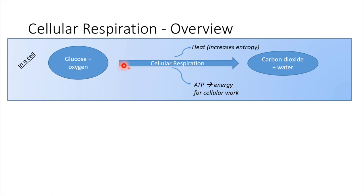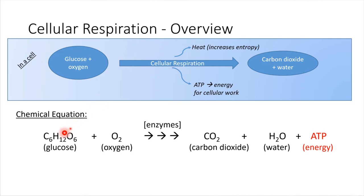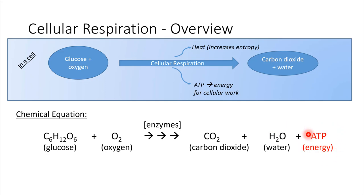How does the cell accomplish this? How does the cell convert glucose into a usable form of energy? Let's start by looking at the overall chemical equation — a more conceptual way to look at cellular respiration. We're starting with a molecule of glucose, combining it with oxygen, and the cell uses a bunch of enzymes. There are a whole series of reactions, catalyzed by enzymes, and the output is carbon dioxide and water — the waste products the cell gets rid of. And then we make ATP. That's the whole goal. This is what cellular respiration is accomplishing: taking a glucose molecule and converting it into ATP.